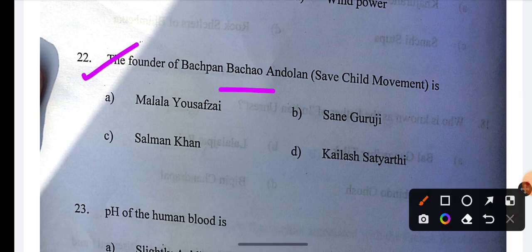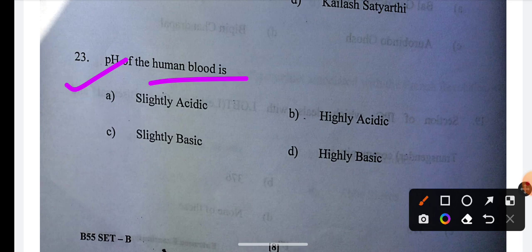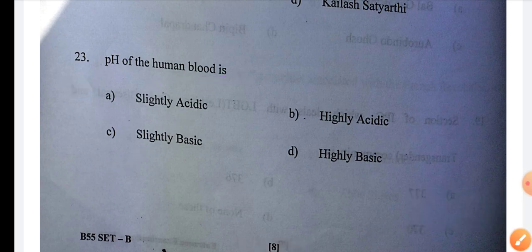Next question: The founder of Bachpan Bachao Andolan, Save Child Movement is? Question 22, the answer is Kailash Satyarthi. Next: pH of human body? Question 23, the answer is C.